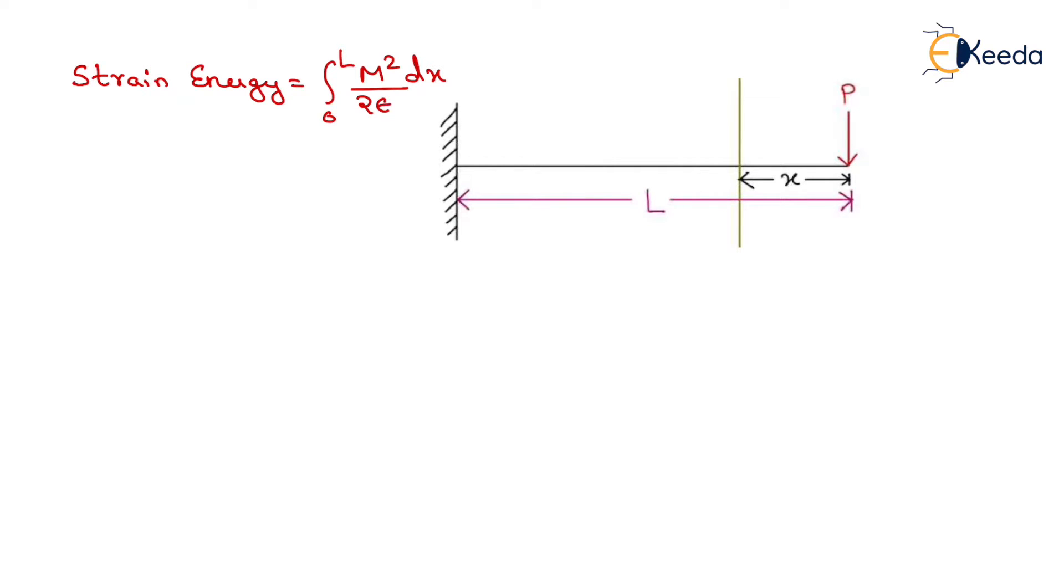We need to find here the moment about x x axis. Due to this P load, a moment of hogging nature will be acting like this, whose magnitude will be equals to P into x.